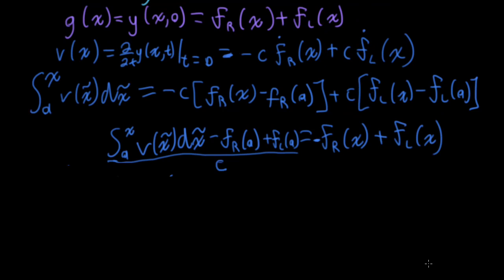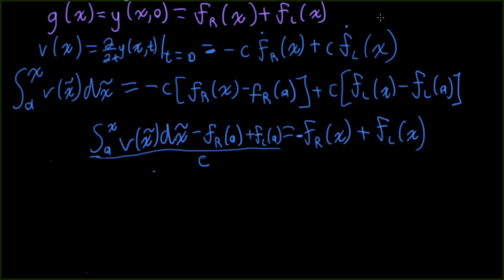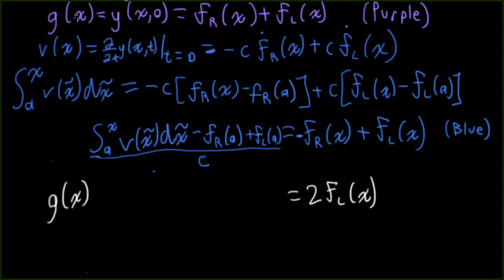So I want to combine the purple and the blue equations. So I have a purple equation, and I have a blue equation. And what I'm going to do is I'm going to combine these equations. So the first thing I want to do is let's try purple plus blue. So if I add the purple equation and the blue equation, the frs on the right cancel, and then I have two f l x on the right. And then on the left, I'll have g x from up here. Then I'll have plus my integral from a to x, v x tilde dx tilde. And then I'll have my minus f r a plus f l a.